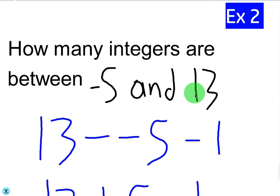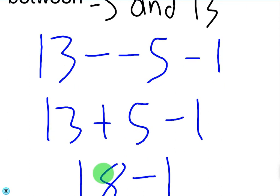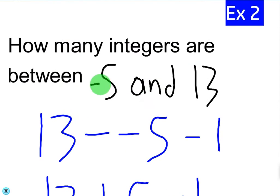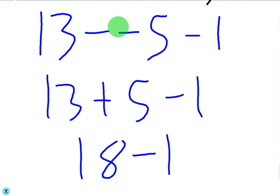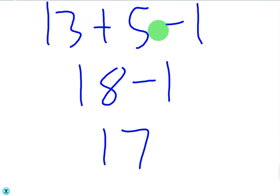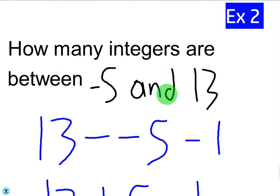How many integers are between negative 5 and 13? We have a negative number and a positive number, but it doesn't matter. You still take the larger number minus the smaller, so we do 13 minus negative 5, which becomes 13 plus 5, giving a difference of 18. That's because it takes five hops to get from negative 5 to 0, and then another 13 to get to 13 — 18 total. Since we're finding the number of integers between them, we subtract one from that, and the answer is 17. It's much easier than counting negative 4, negative 3, ... all the way to 12, which also adds up to 17.